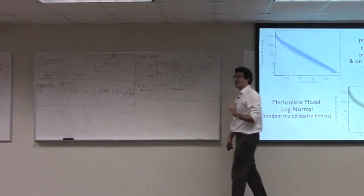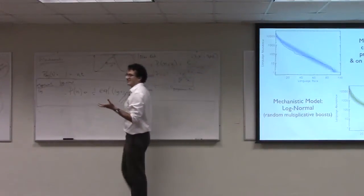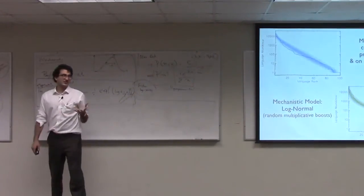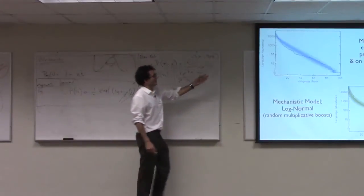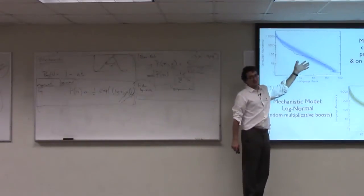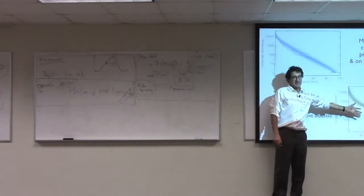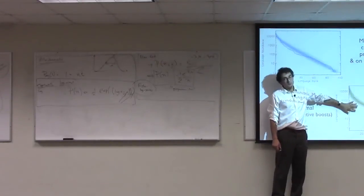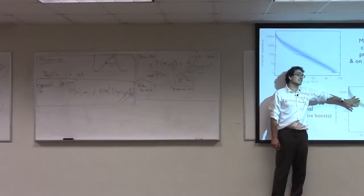So the mechanistic model, at least visually, looks like it's extremely competitive with the Fisher log series model derived from a Maxent argument. Statistically speaking, if you look at these two, this one is actually slightly dispreferred.